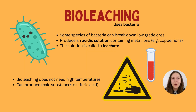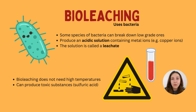The second method is called bioleaching. The prefix 'bio' refers to living things — as in biology, the study of life — and here it refers to the living organism used in this process: bacteria. There are many types of bacteria; you don't need to know the specific strain, just that certain bacteria can break down low grade ores and, as a result, produce a very acidic solution containing metal ions such as copper. Copper is a really useful resource — it's used in many electrical wires and is a very good conductor of electricity.